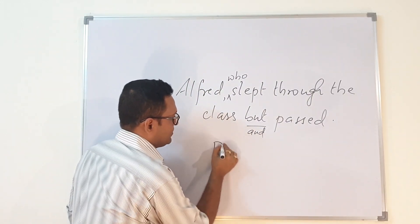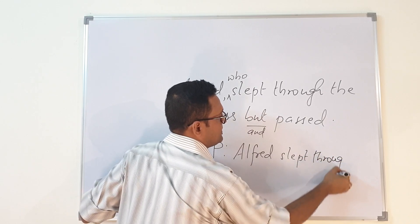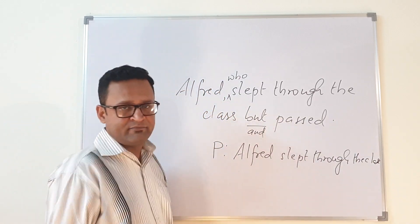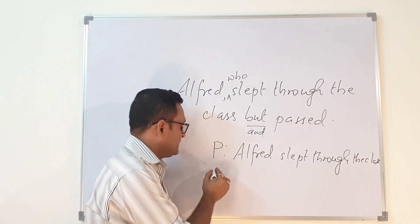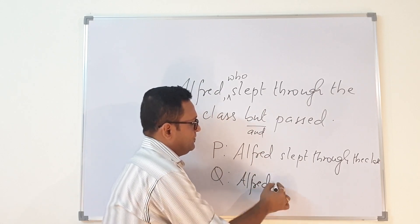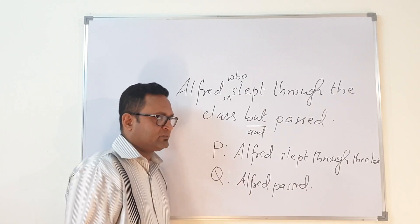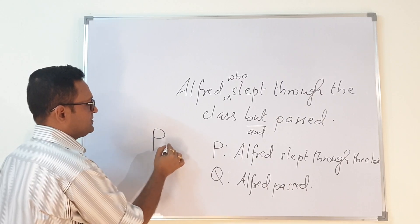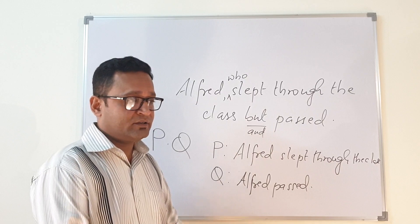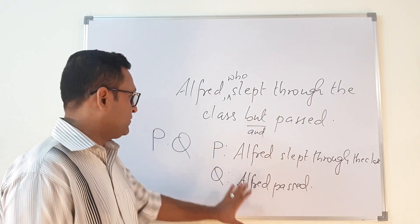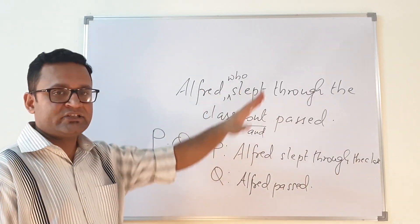First: Alfred slept through the class — perhaps he found the class boring and was always sleeping. Second: Alfred passed. So it is nothing but a conjunction. Even though there was a 'but' instead of a conventional 'and', the symbolization is basically a conjunction: Alfred slept through the class AND Alfred passed.